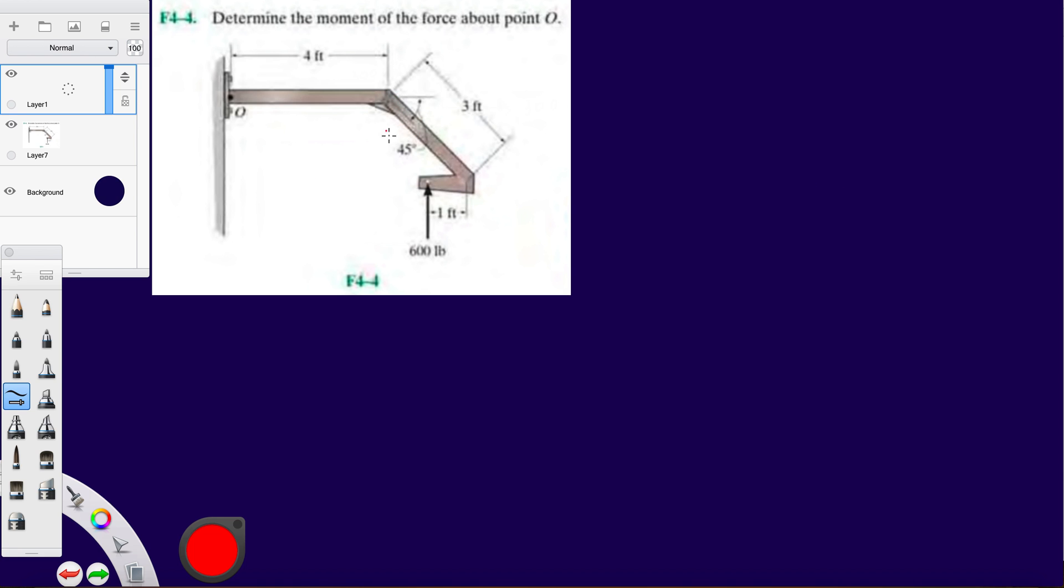So we know that they're pretty much giving us a hypotenuse of this triangle here. So we know that this side is going to be - again, this is the angle with the horizontal.